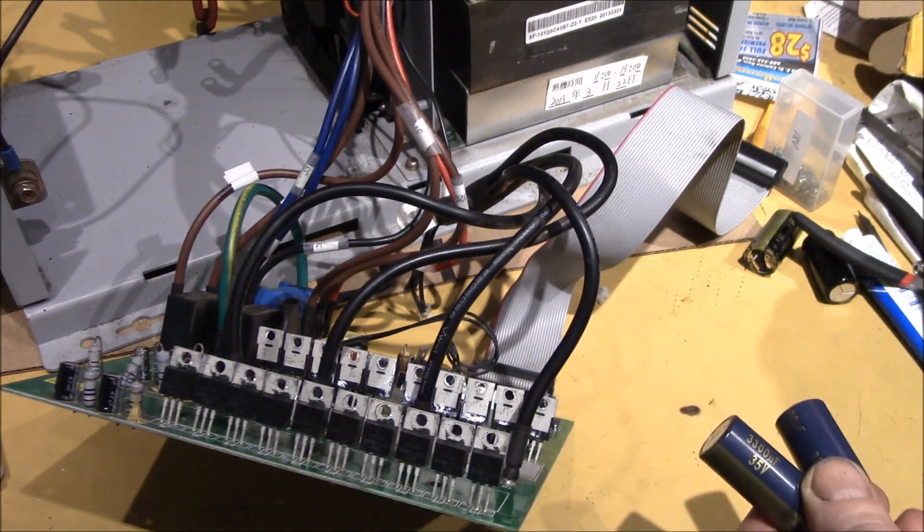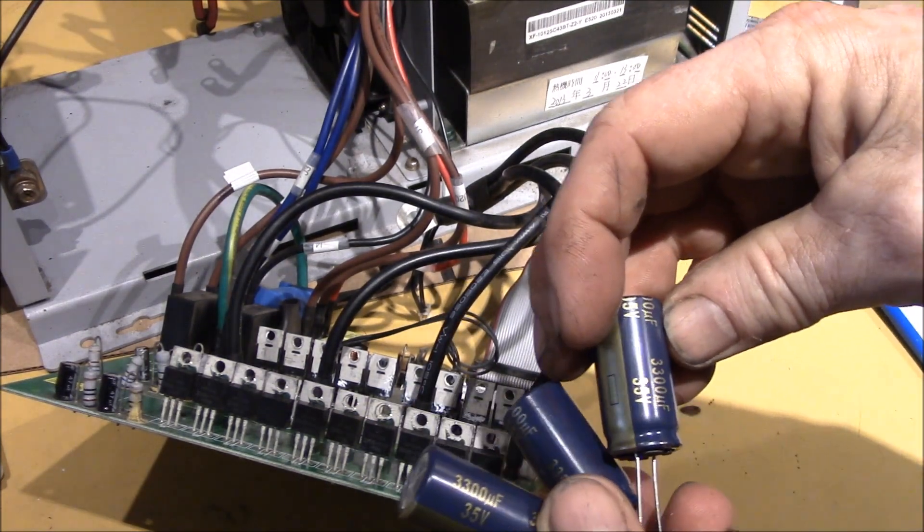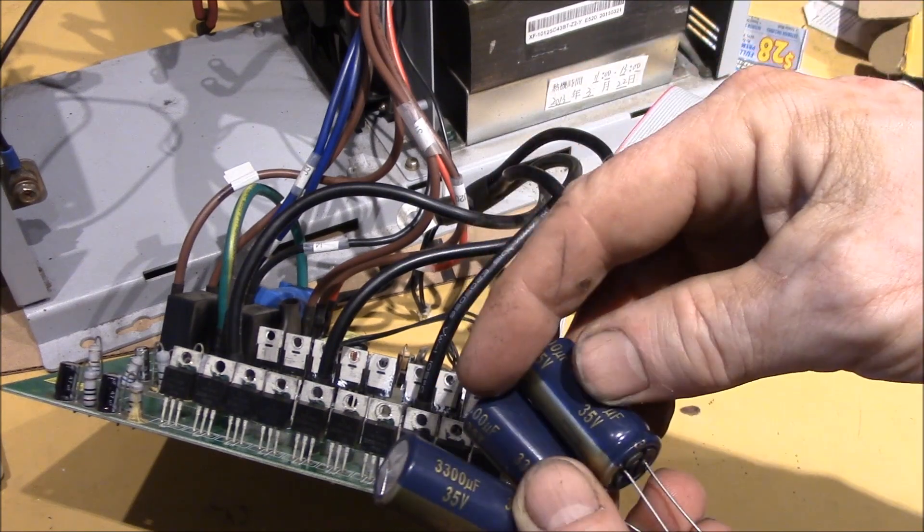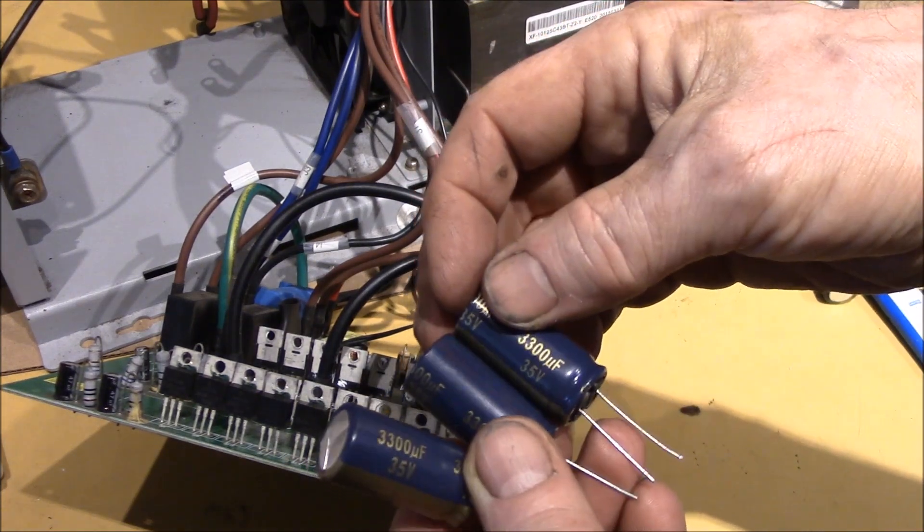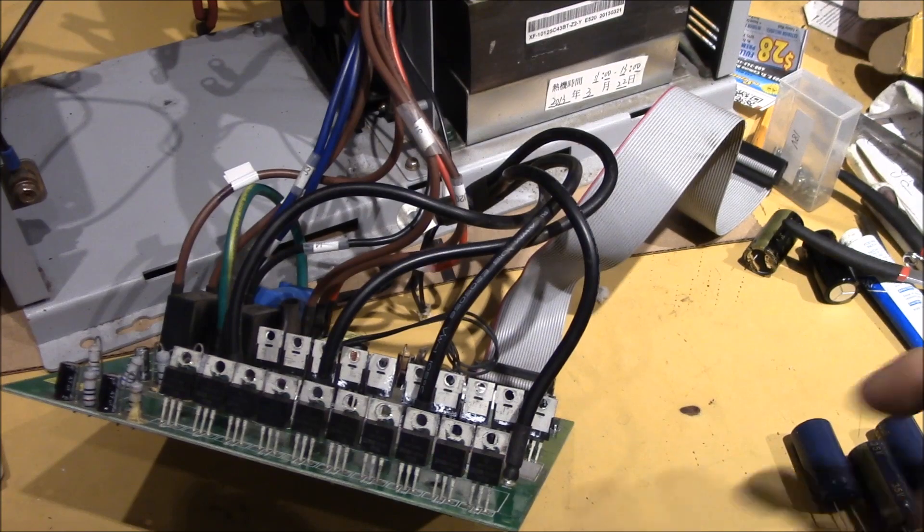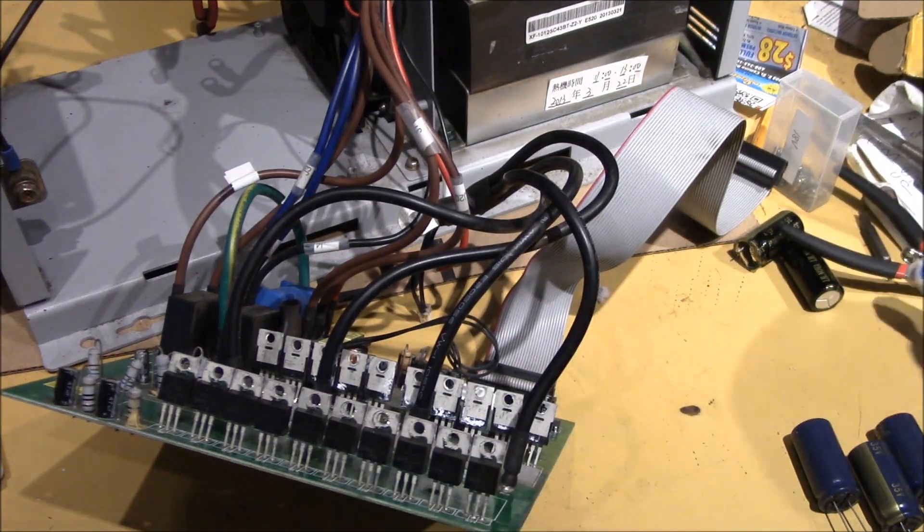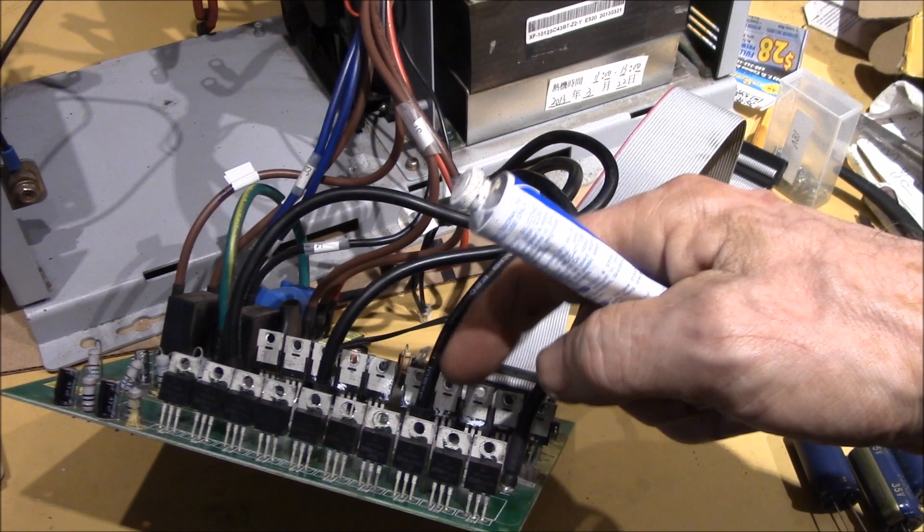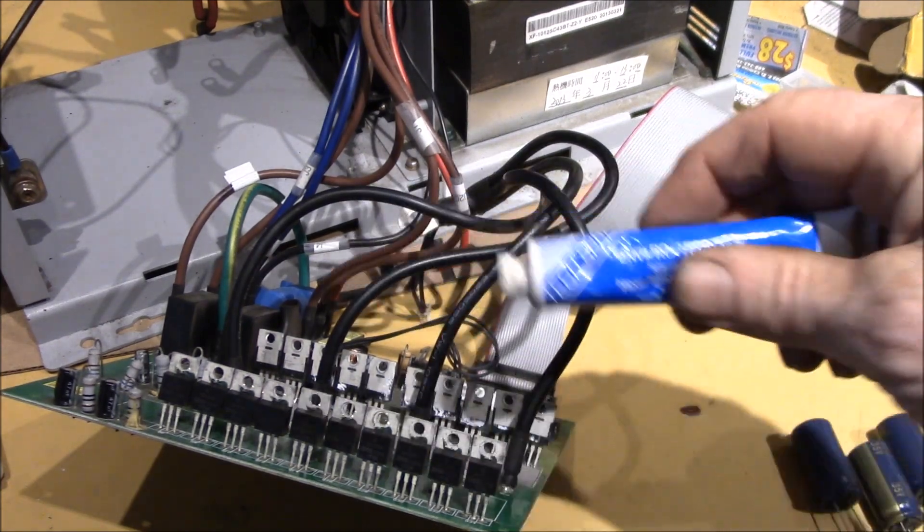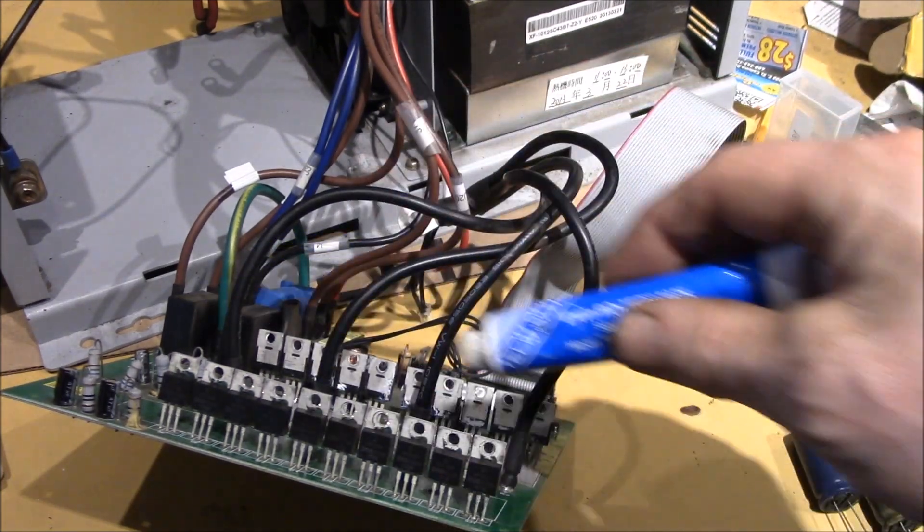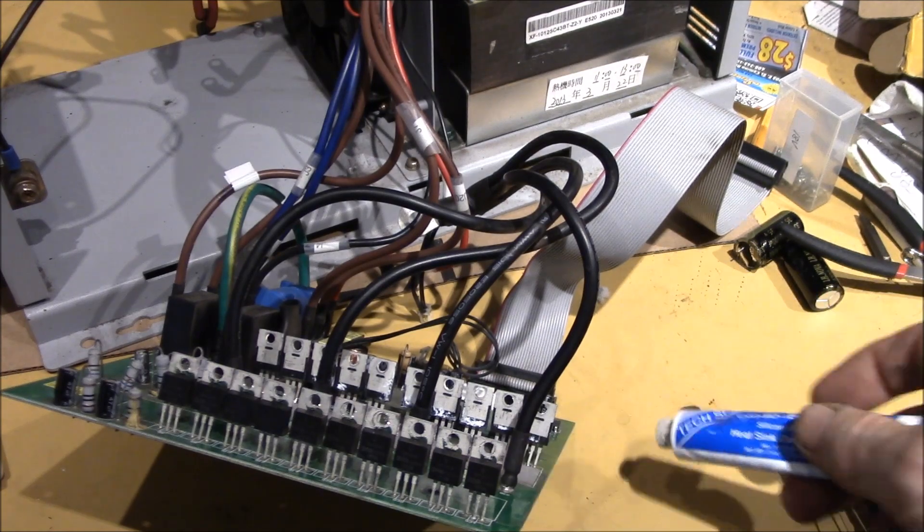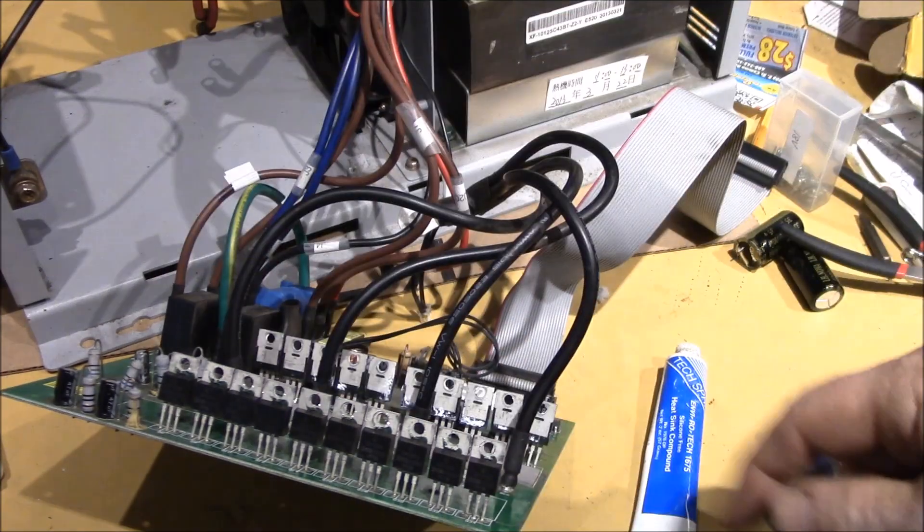So that checks out, they all check out 3300 plus or minus a few microfarads. So I think we've got good capacitors. So I'm going to go ahead and put those in. We'll get them glued down, soldered, and then I'll put some new thermal paste on all the transistors. And then we'll screw all those back in.